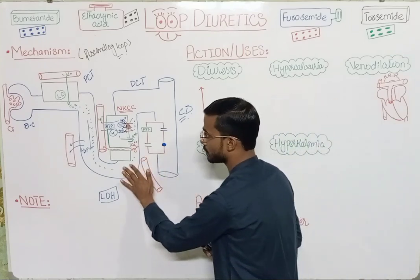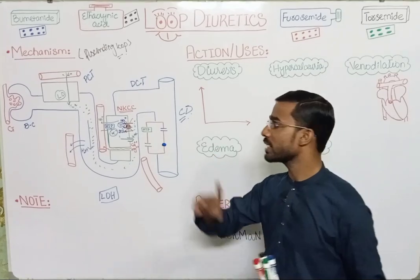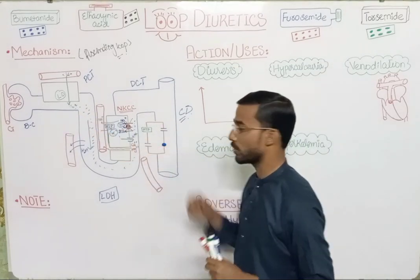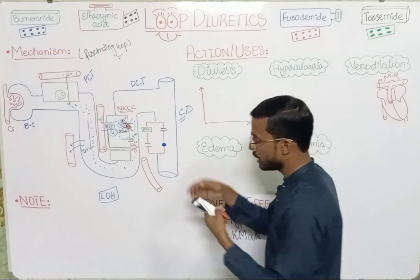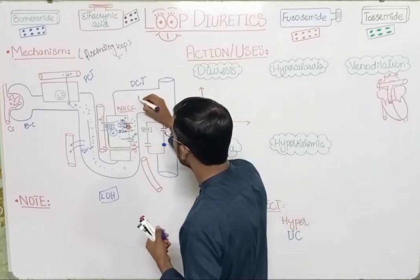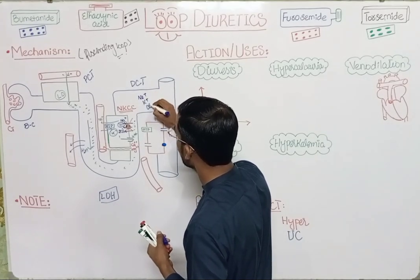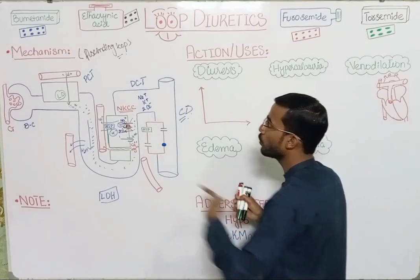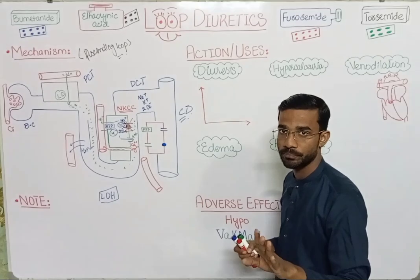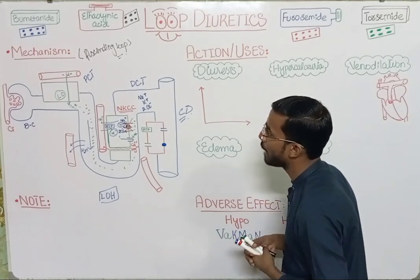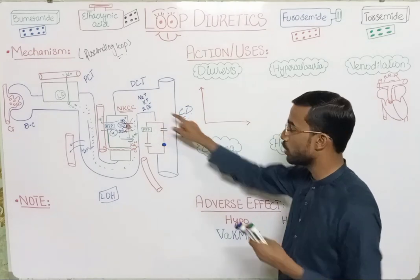Just like thiazide diuretics act similarly — as discussed in a previous video — it means that sodium, potassium, and chloride remain in the tubule and move toward the distal convoluted tubule and finally into the collecting duct.